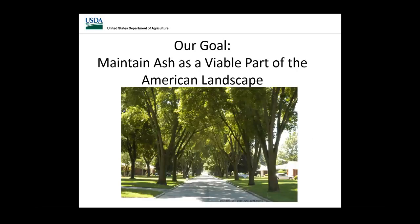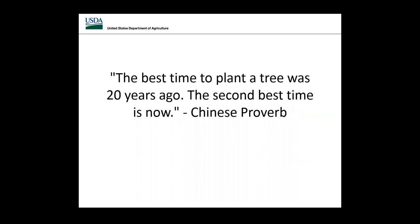Our overall goal and why we're doing all this is to maintain ash as a viable part of the American landscape. We're not advising people to plant strictly ash-lined streets anymore — we know we need to diversify plantings — but we want to see ash still as a useful part of our environment. We do not want to see it go away, and we're going to keep at it until we get there.